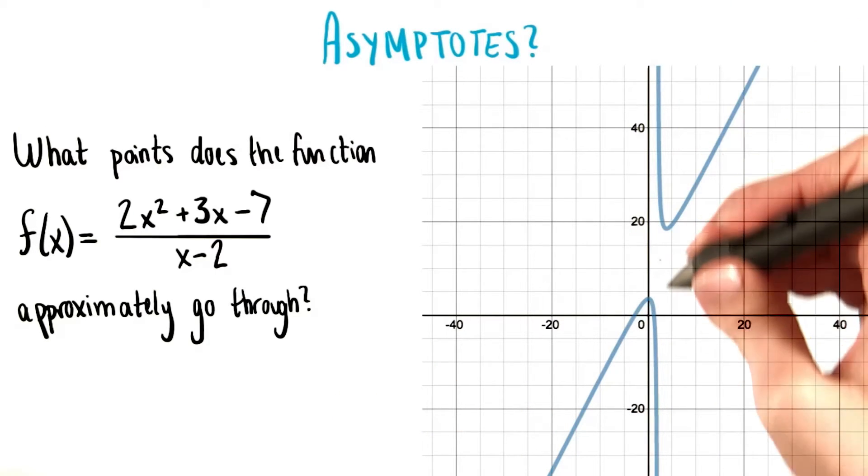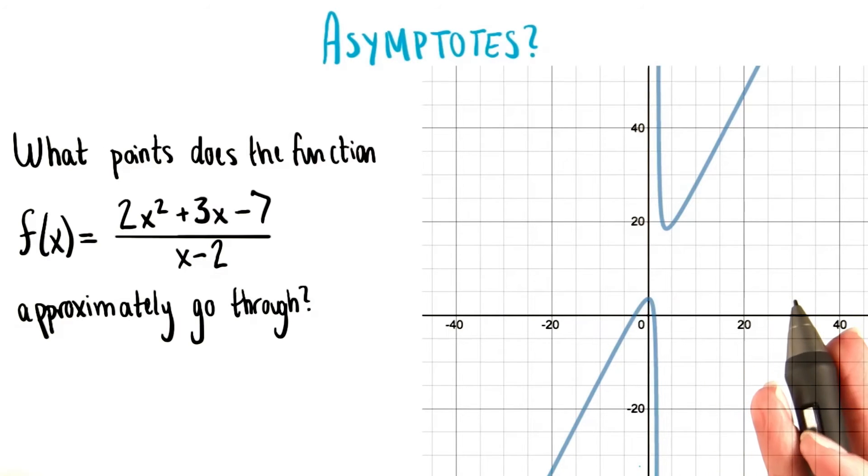And we can also see our vertical asymptote right here. Pretty cool. Asymptotes clearly are what determines the overall behavior of rational functions.